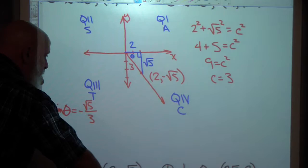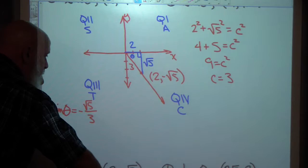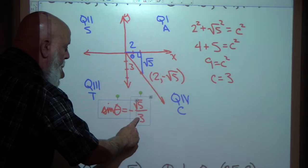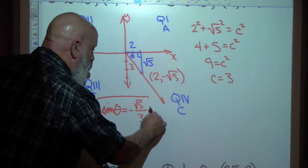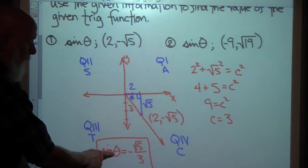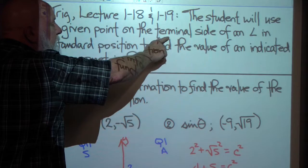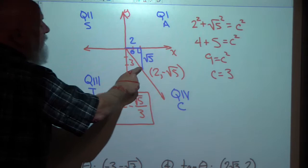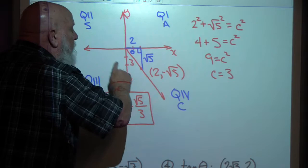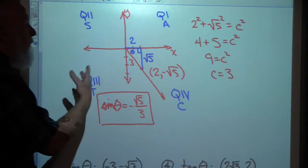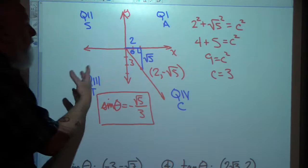And that's our answer: negative radical 5 over 3. We used a given point on the terminal side of an angle in standard position to find the value of the indicated trig function. We found the value of this trig function by finding the value of its reference angle, bearing in mind that we're in quadrant 4, so the sine is negative.